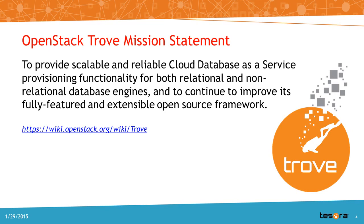There was a question about AWS SimpleDB. An important distinction between Amazon's database service capabilities and Trove is that Trove intends to provide users with a simple and consistent interface to both relational and non-relational databases. In OpenStack Trove, there is currently no support for SimpleDB, but there is support for a number of NoSQL databases. One of the things which makes it easy with OpenStack is the ability to add a data store, which we'll talk about shortly.